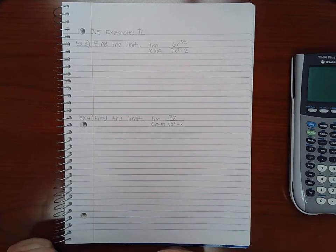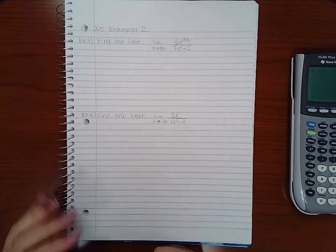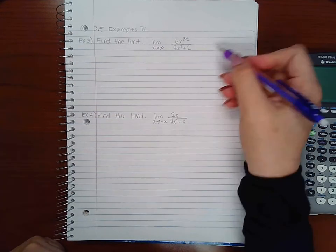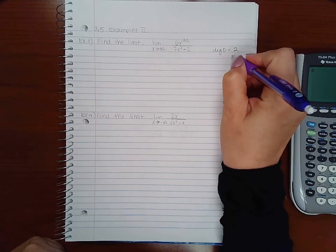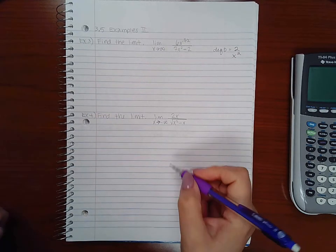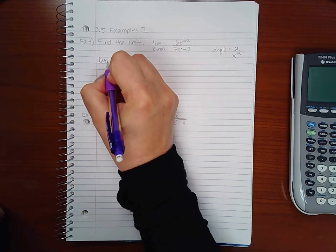This is examples part 2 of section 3.5. So let's look at the degree of the denominator. This time the degree is 2, so we're going to divide every term by x squared.